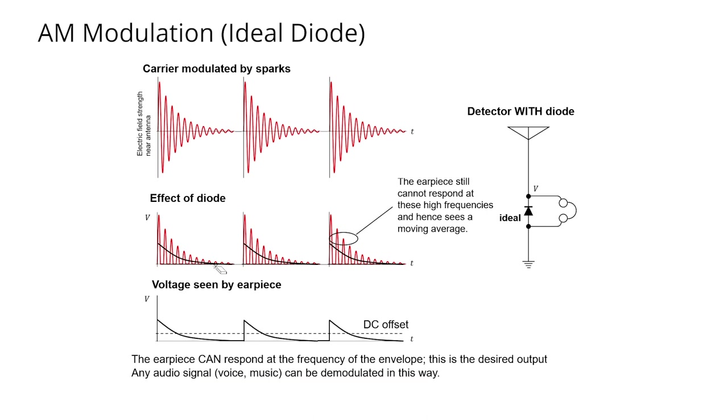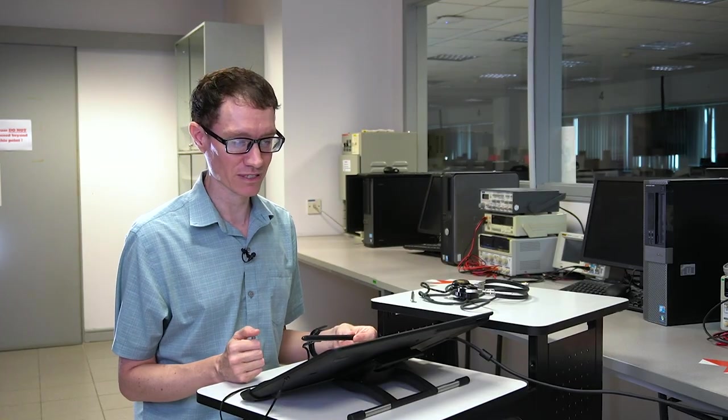There's a DC offset. In other words, current, on average, will go up through the diode and then back down through the headphones. And the frequency of that sawtooth wave is roughly the sparking frequency. This circuit works. If we put the headphones on and we have a spark gap transmitter transmitting nearby, then we're going to hear something like a sawtooth wave at the sparking frequency.